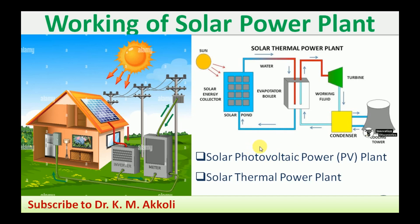There are two methods for conversion of solar energy into electrical power. One method is the solar photovoltaic PV plant, and another one is called the solar thermal power plant. I'm going to explain about these two power plants, and also the advantages and disadvantages associated with this very important source of renewable energy.